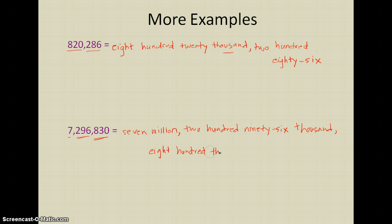And put another comma, and then I'm going to write the last part of the number here, which is 830. And so now I have written out the number, and if I read it out loud it should look just like the way that I read the number when I read it: seven million, two hundred ninety-six thousand, eight hundred thirty.